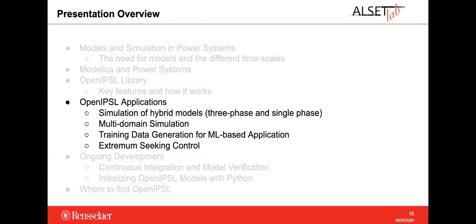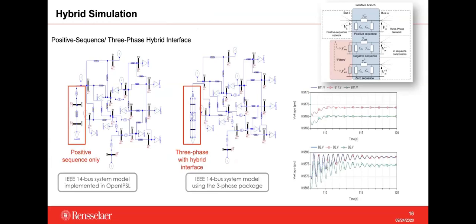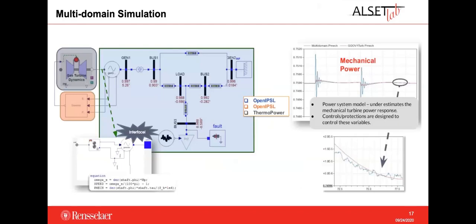The first application is that the library now has a dedicated sub-library of models for the representation of three-phase elements, along with an interface model that allows interconnection of three-phase elements to positive-sequence elements. This allows accurate representation of the effects of unbalances in the grid. A study was conducted to show how unbalanced conditions can harm system stability and how to represent those unbalances using this three-phase package in OpenIPSL.